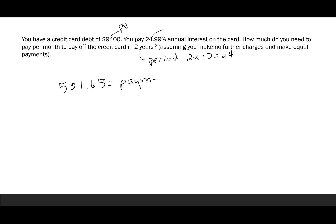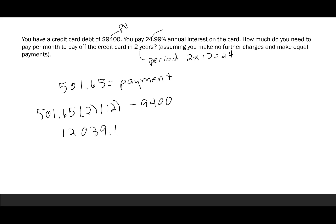How much interest are you paying? Total paid: $501.65 × 24 = $12,039.60. Subtract the $9,400 owed, and you've paid $2,639.60 in interest over just two years. That's a very high amount for a short time, which is why it's so important to pay attention to the interest rate on your credit card.